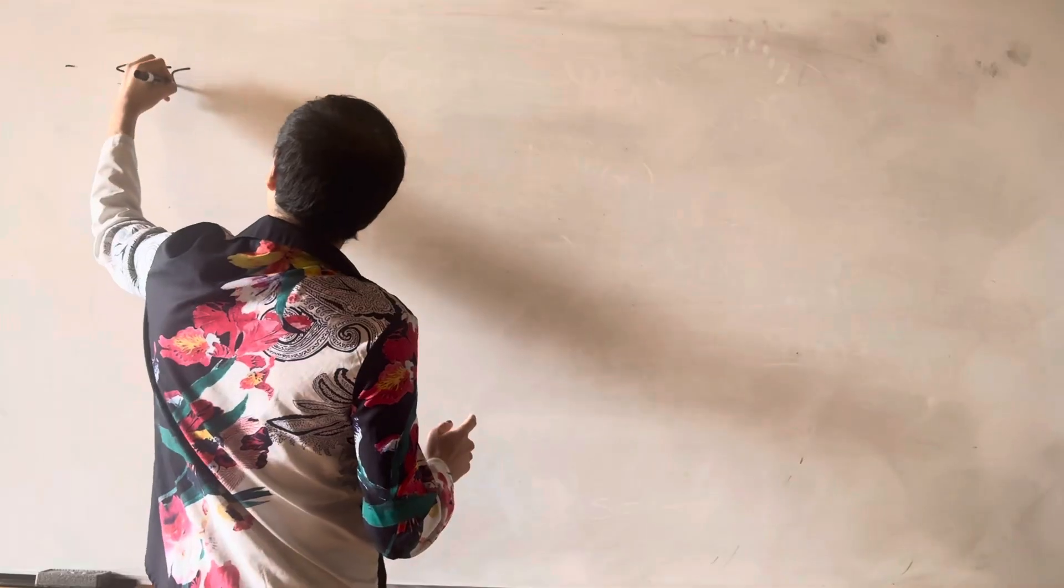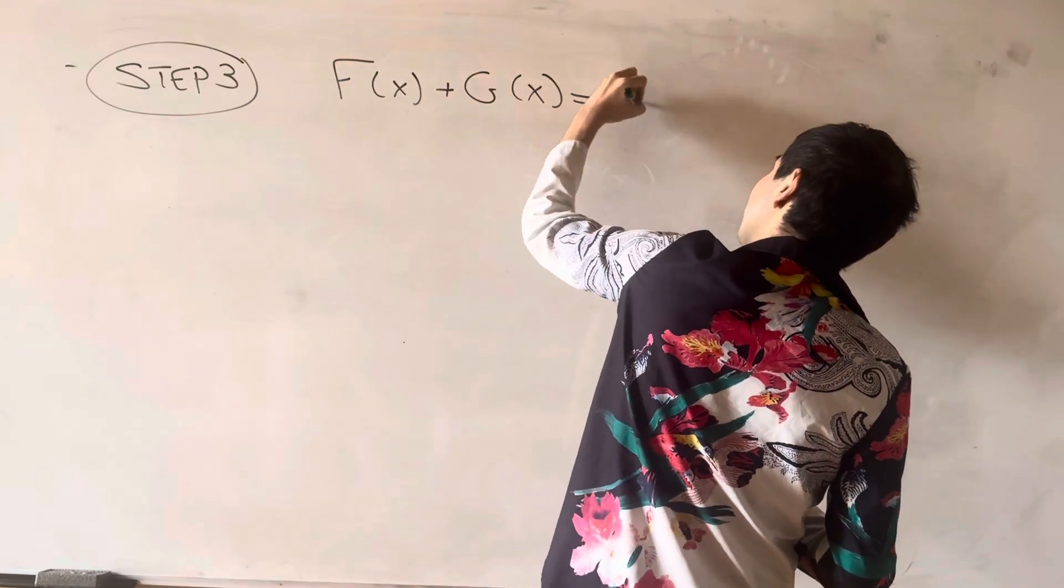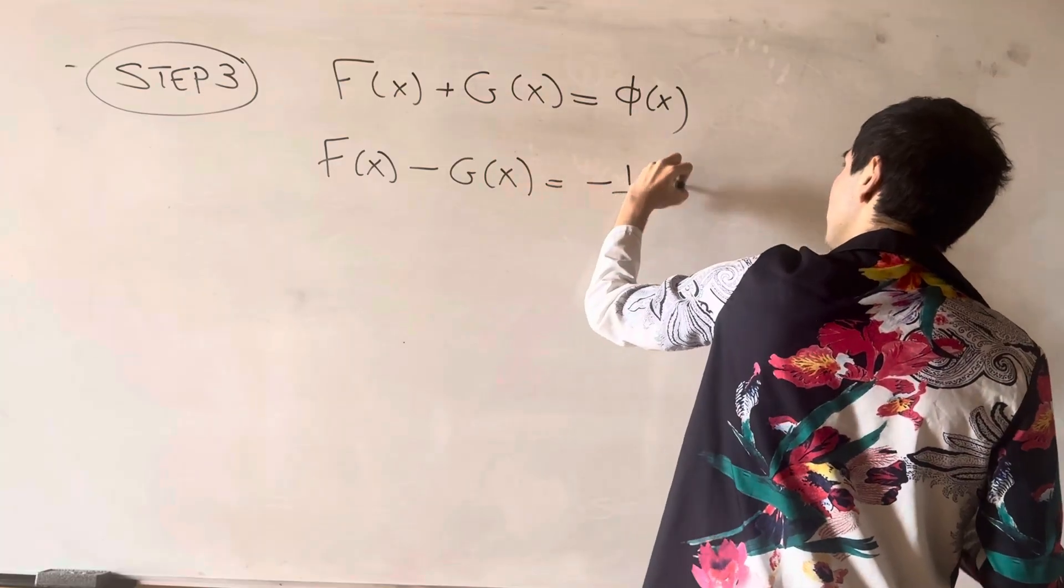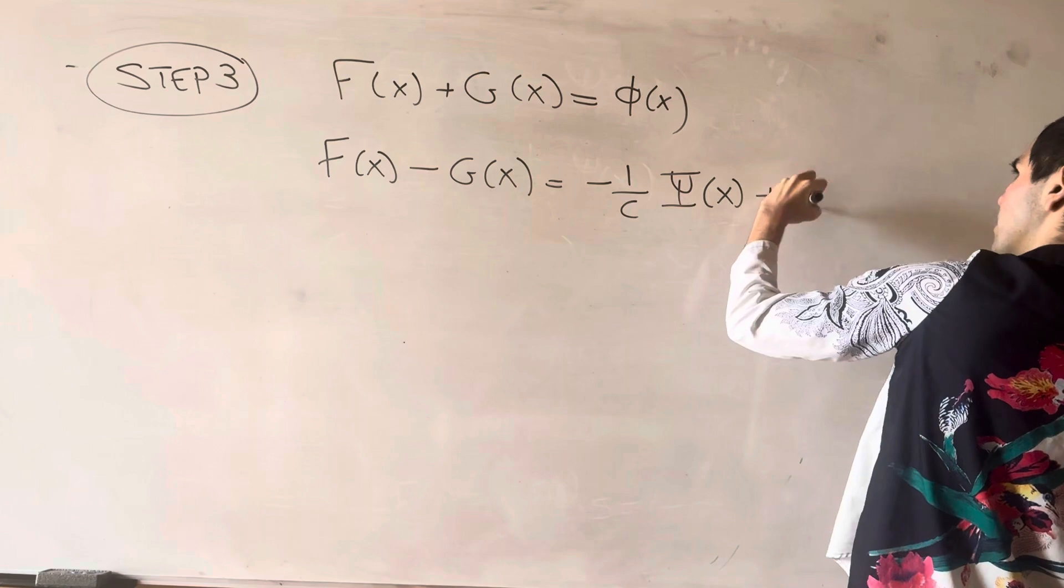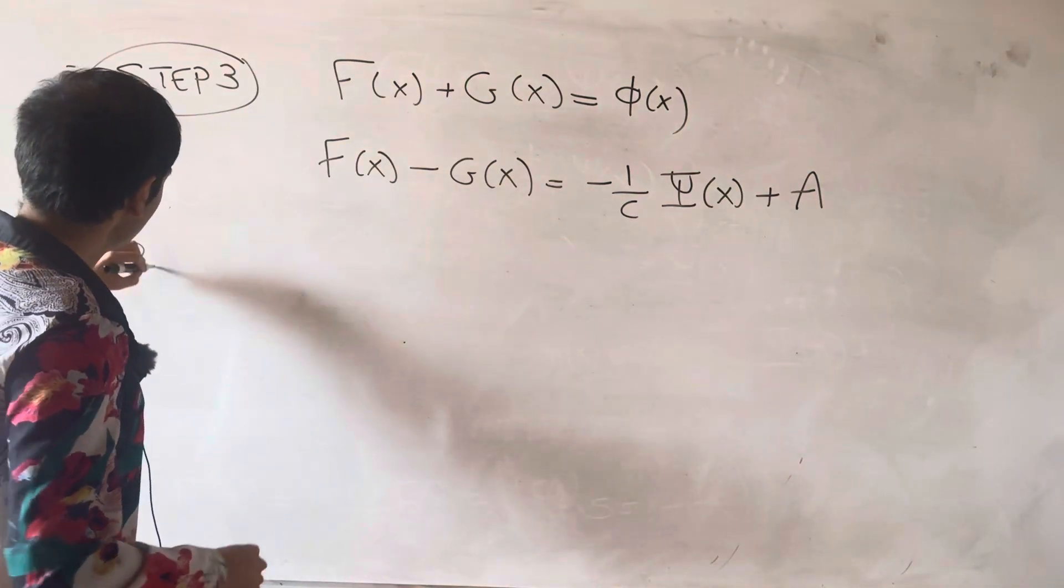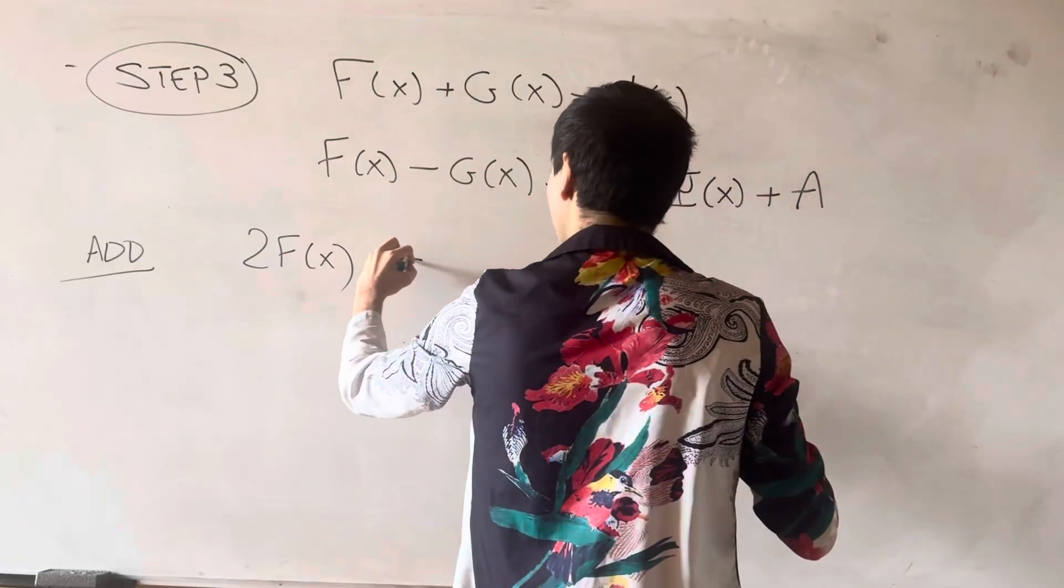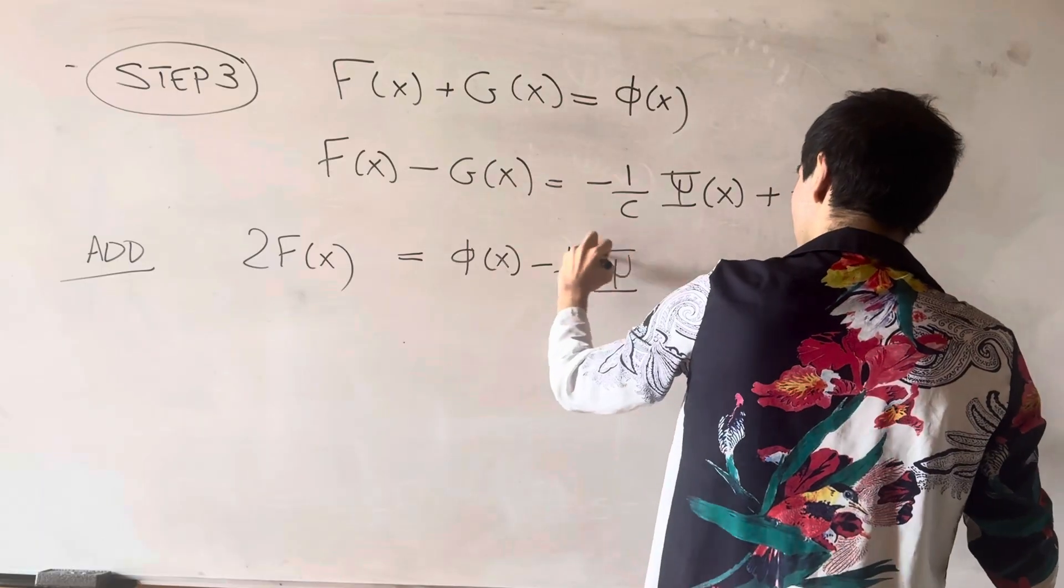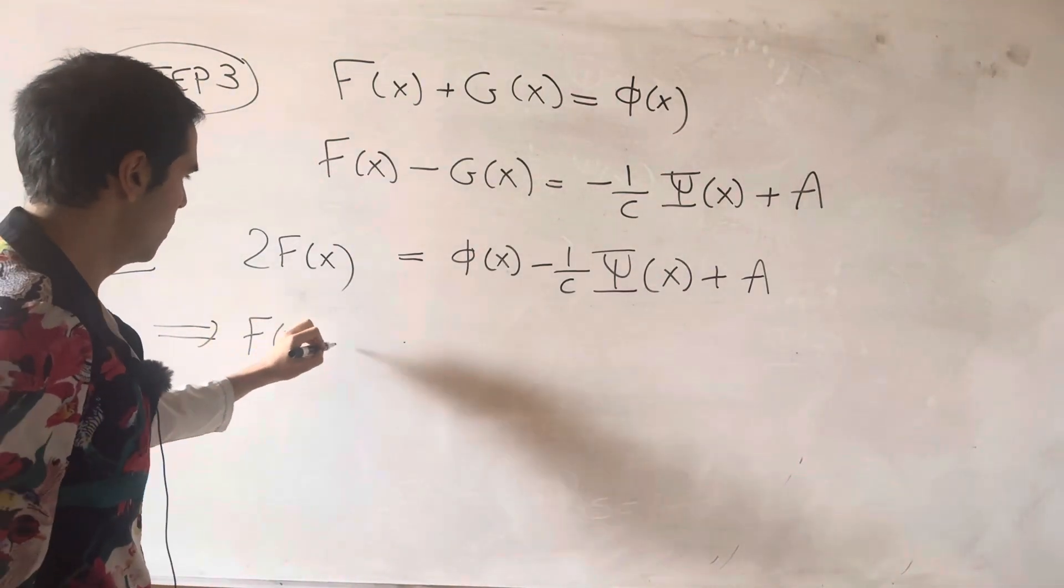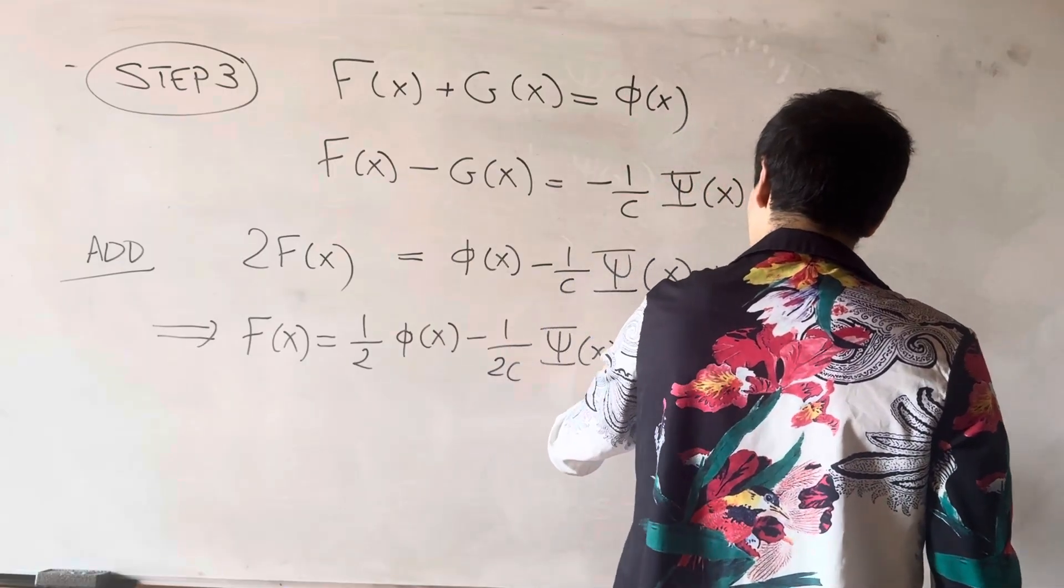Step three, we have two equations because we have f of x plus g of x equals phi of x. And we have f of x minus g of x is minus one over c Psi of x plus a constant. And now, to solve for f and g, we just add and subtract. So, if you add, you get two f of x equals phi of x minus one over c big Psi of x plus a. So, f of x is one half phi of x minus one over 2c big Psi of x plus a over two.